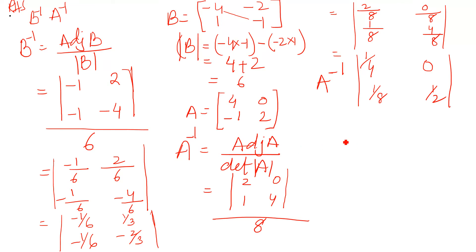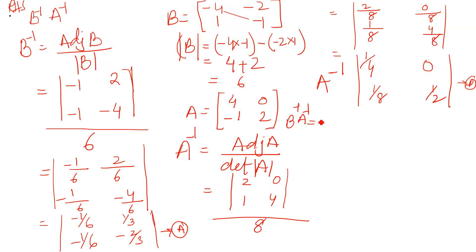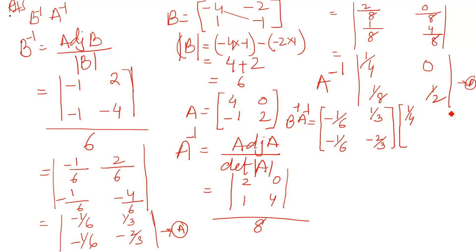Now we multiply B inverse by A inverse. B inverse is [-1/6, 1/3; -2/3, -1/6] and A inverse is [1/4, 0; 1/8, 1/2]. Use the same row-by-column pattern. There are fractions involved — do not worry, it is very easy. First row of B inverse with first column of A inverse: (-1/6)×(1/4) + (1/3)×(1/8).